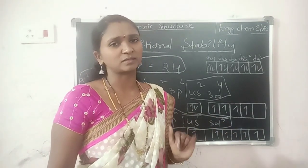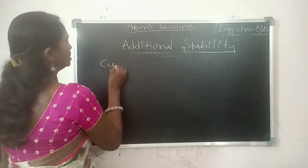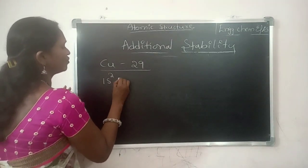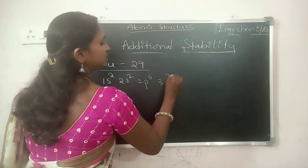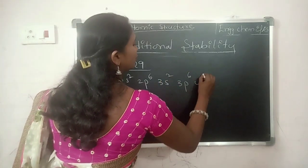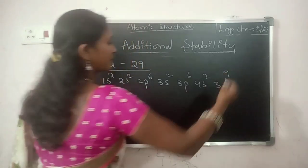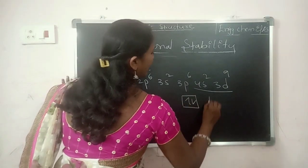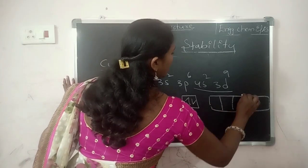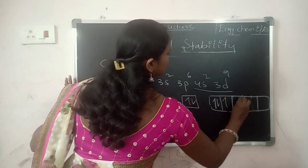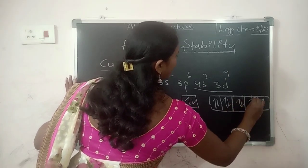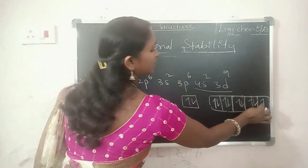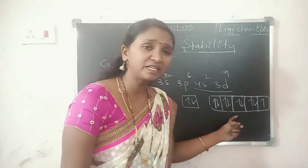Let us take another example — copper. Copper has atomic number 29. The actual configuration is 1s2, 2s2, 2p6, 3s2, 3p6, 4s2, 3d9. So 4s orbital has 2 electrons and 3d orbital has 9 electrons. But this is an incompletely filled orbital.